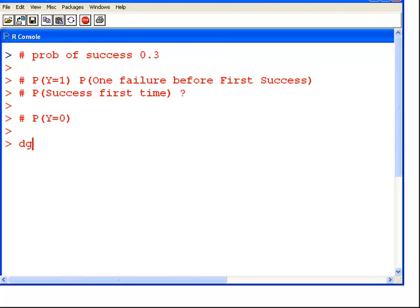So how do we do that with R? So it will be dgeom, and zero attempts, or zero failures before the first success, and the probability of success is 0.3. Now, what does that do, 0.3? That actually sort of makes sense if you think about it. What's the probability? If your probability of success is 0.3, what's the probability you get it right the first time? 0.3.